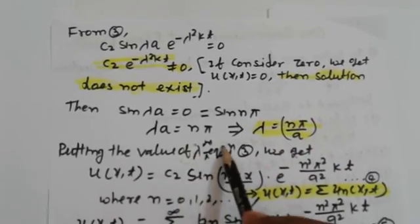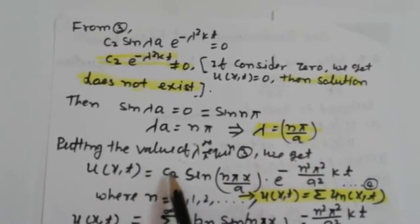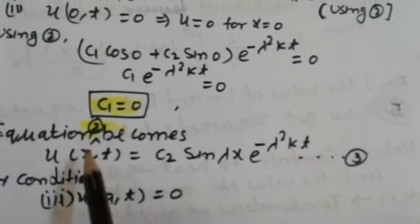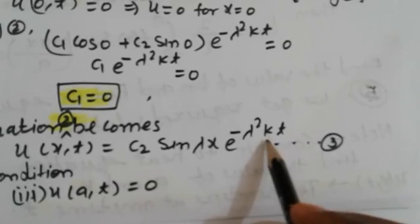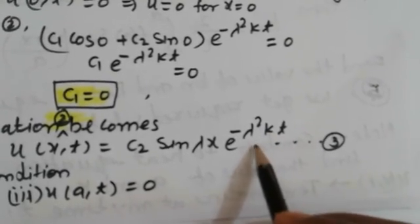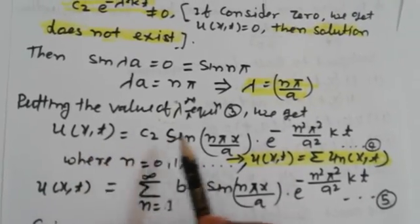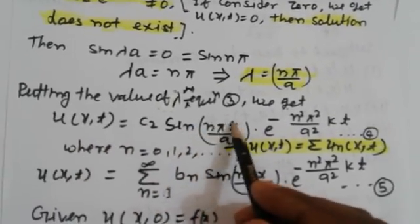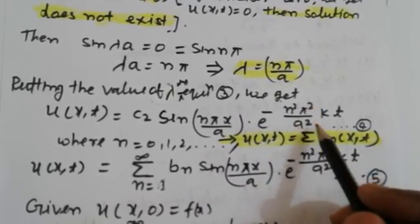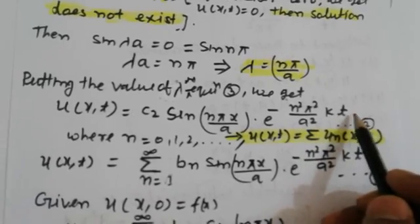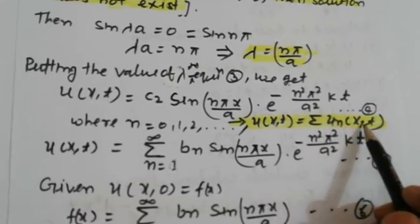Substituting the value of λ = nπ/a into equation (3), we get u(x,t) = c₂ sin(nπx/a) · e^(−n²π²kt/a²). By superposition, the general solution is u(x,t) = Σ uₙ(x,t).